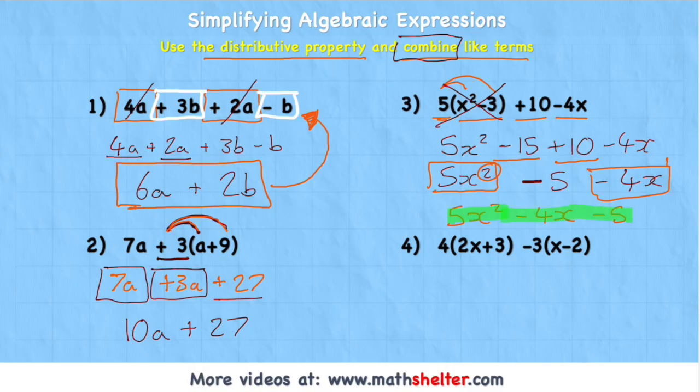Okay, let's look at our very last one. 4 and then in brackets 2x plus 3, negative 3. And then in another bracket, x minus 2. So now I have two lots of distribution. So I'm going to distribute this 4 to the 2x and then to the 3. And then I'm going to distribute this negative 3 to the x and then to the negative 2. So let's start with 4 multiplied by 2x would give me 8x. And then 4 times plus 3 is plus 12.